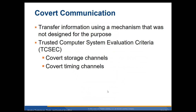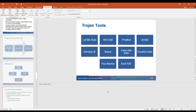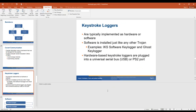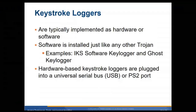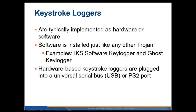Covert communication: transferring information uses a mechanism that was not designed for that purpose. Using the Trusted Computer Systems Evaluation Criteria, there are covert storage channels where you can hide data within files, and covert timing channels. Keystroke loggers are typically implemented as hardware or software — hardware goes inline with your keyboard, while software is installed just like any other Trojan. Examples include IKS Software Keylogger and Ghost Keylogger. Hardware-based ones are plugged into your USB or PS/2 port, inline with the cable.